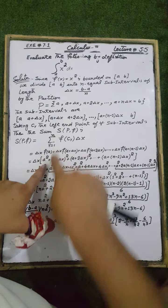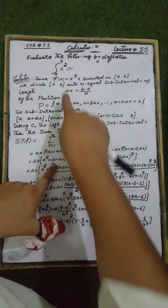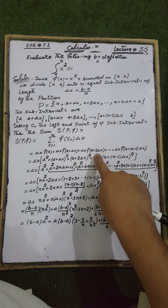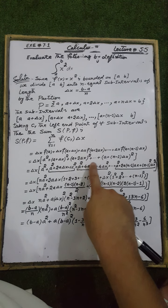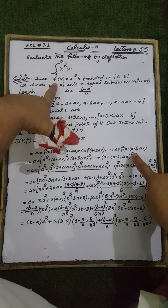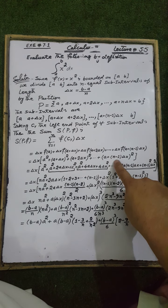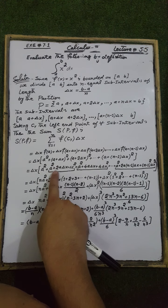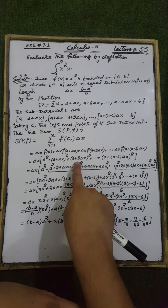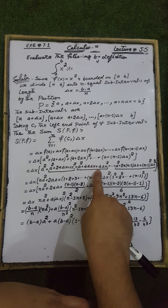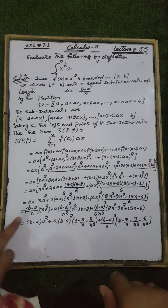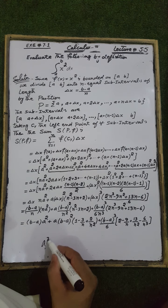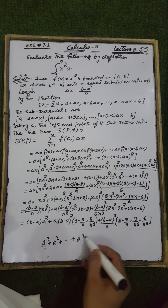With Δx common, the sum expands as Δx times [f(a) + f(a + Δx) + f(a + 2Δx) + ... + f(a + (n-1)Δx)]. Substituting into f(x) = x²: we get Δx[a² + (a + Δx)² + (a + 2Δx)² + ... + (a + (n-1)Δx)²]. Expanding: (a + Δx)² = a² + 2aΔx + Δx², and (a + 2Δx)² = a² + 4aΔx + 4Δx², and so on.